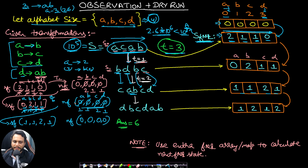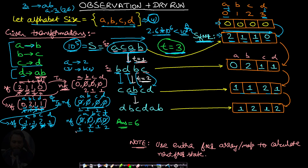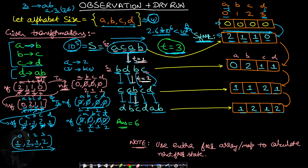For transformation T3 with state [1, 1, 2, 1]: one a contributes one b, one b contributes one c, two c's contribute two d's, and one d contributes one a and one b. So b gets 1 + 1 = 2. Final state: [1, 2, 1, 2]. Summing all values: 1 + 2 + 1 + 2 = 6, so the answer is 6.